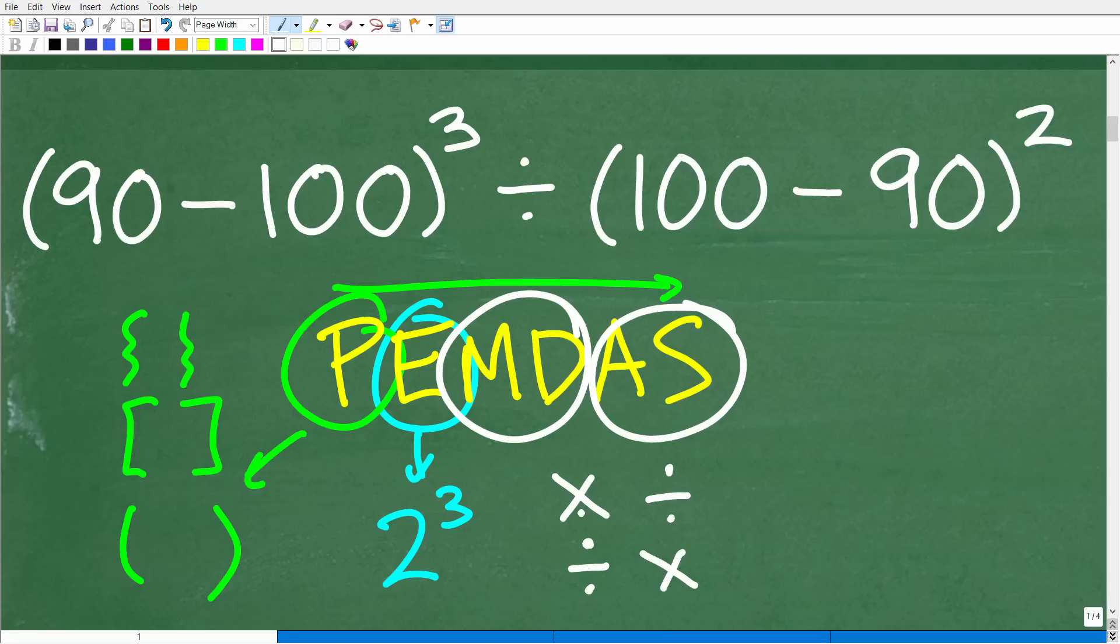So you're going to do whatever you see first from left to right. Okay, so if you see multiplication and then division, you're going to do it this way. But if you see division first from left to right, you're going to do it this way. Addition and subtraction work the same way.